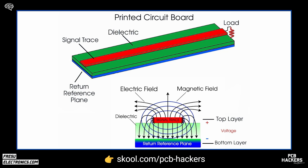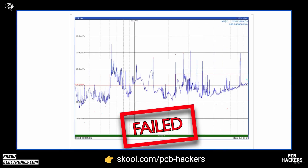Why is this important for us? Without a return reference plane close to the signal trace, electric fields can extend further and may interact with unintended parts of the circuit or external environments, potentially leading to electromagnetic interference issues. This is why return reference planes are critical in PCB design — to ensure controlled propagation of electric fields and to minimize interference. Many of the problems we encounter during EMC tests in fact arise from poorly designed layouts where the fields are not well contained and extend further, disrupting the operation of other devices or components.